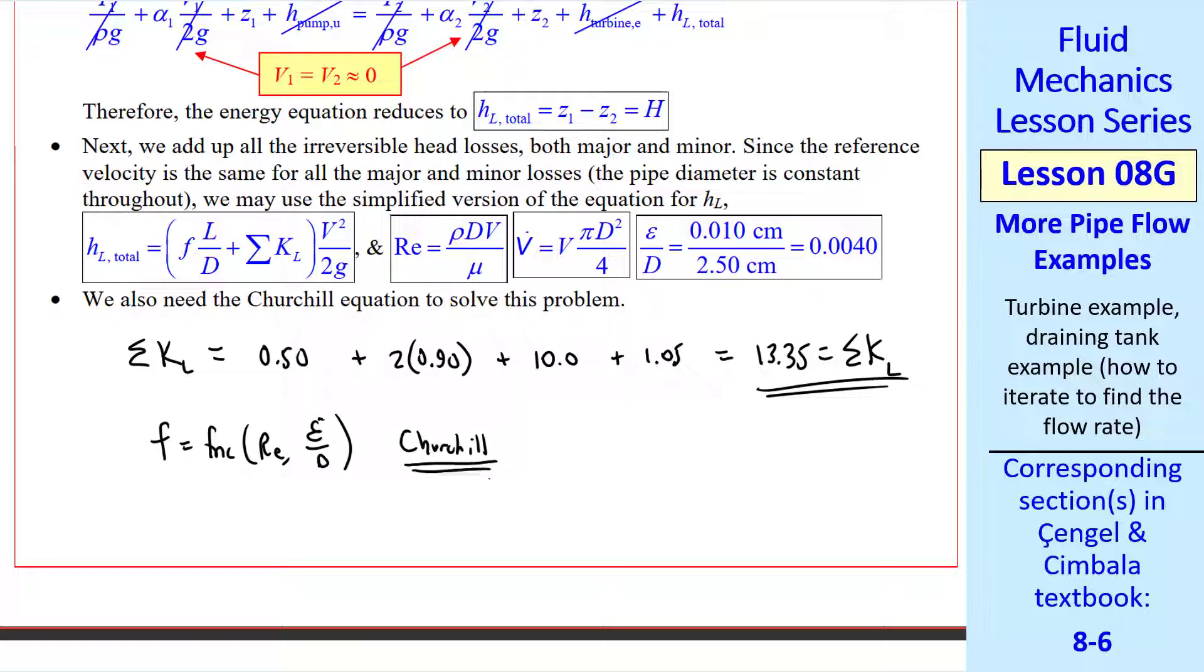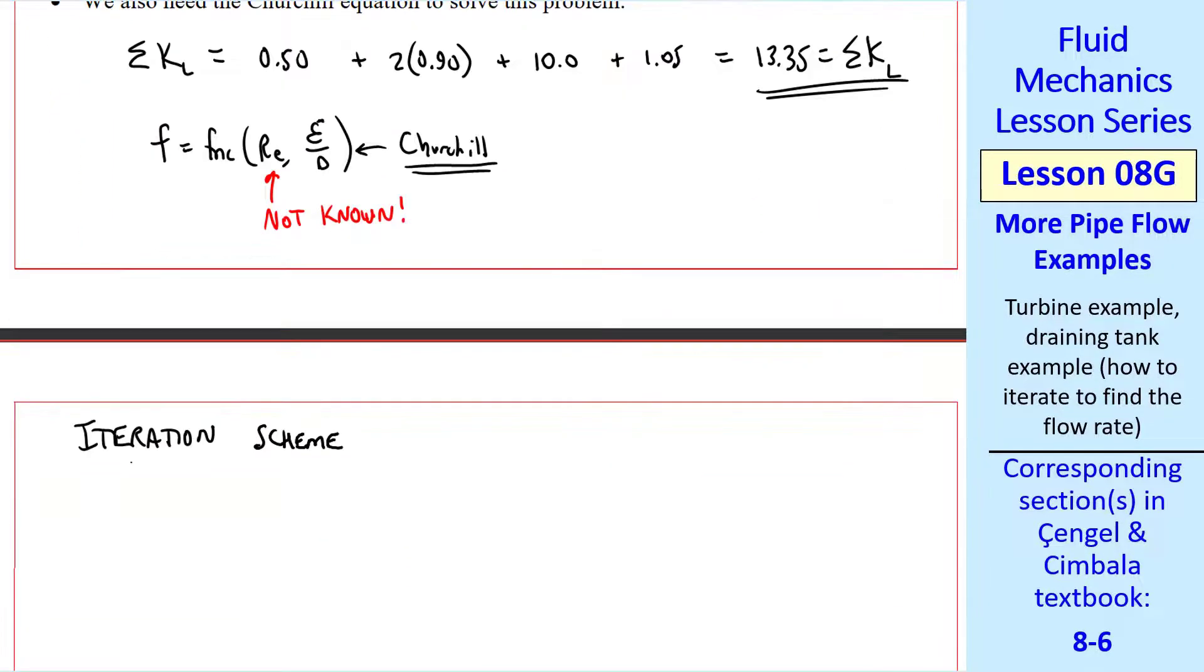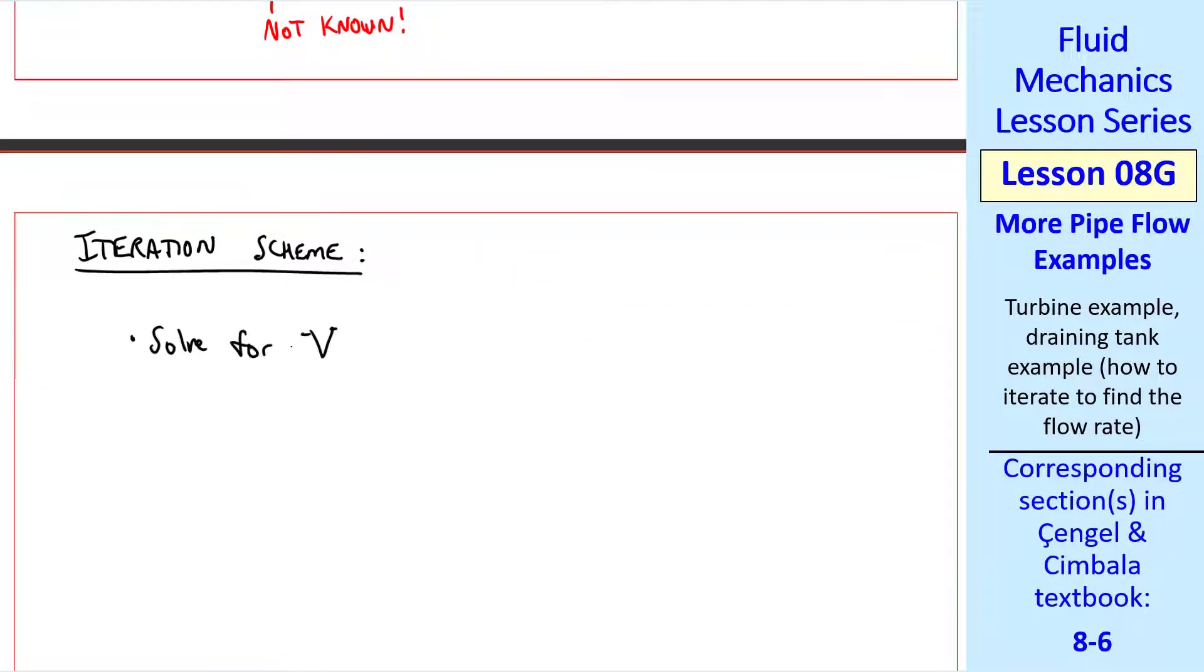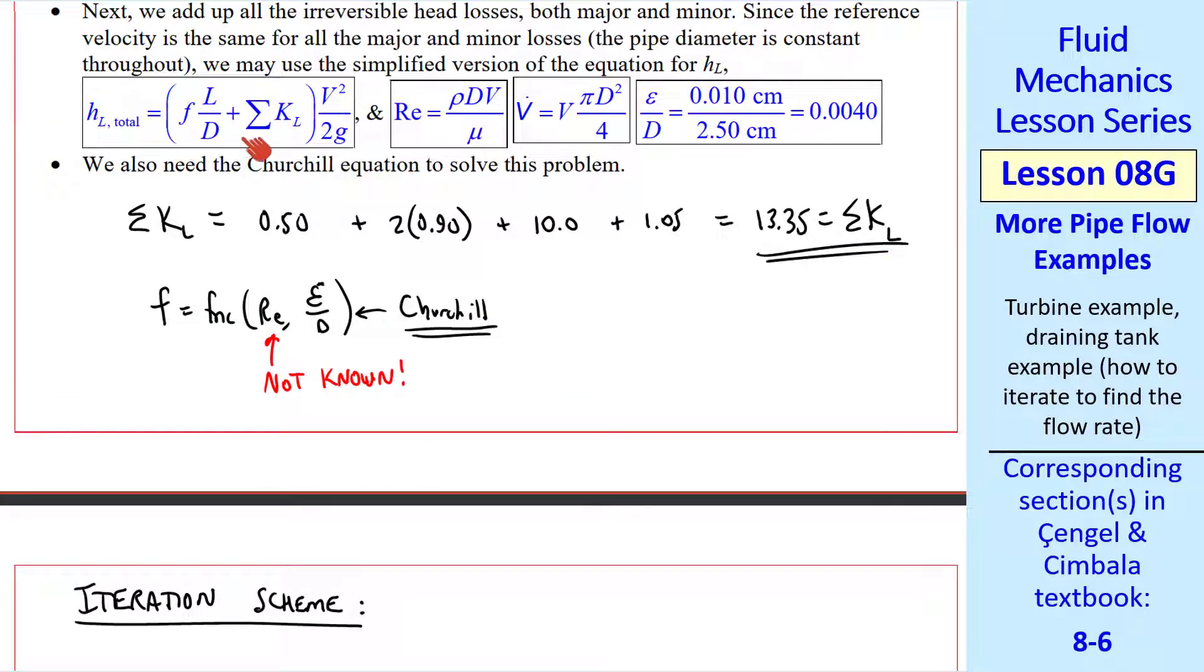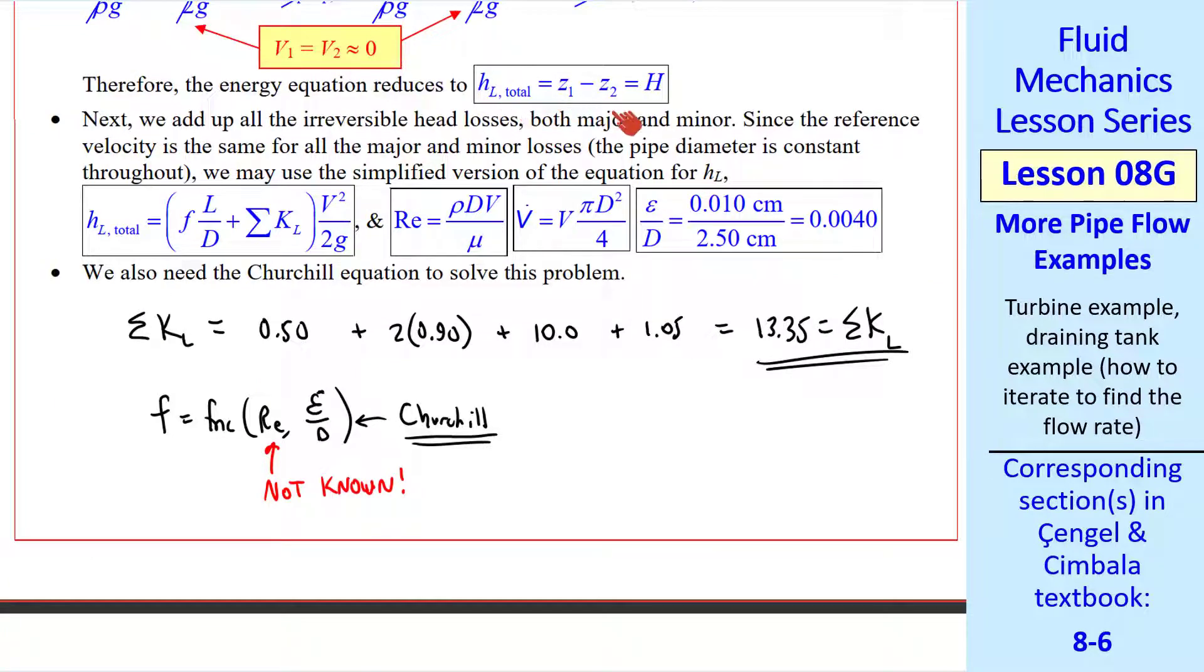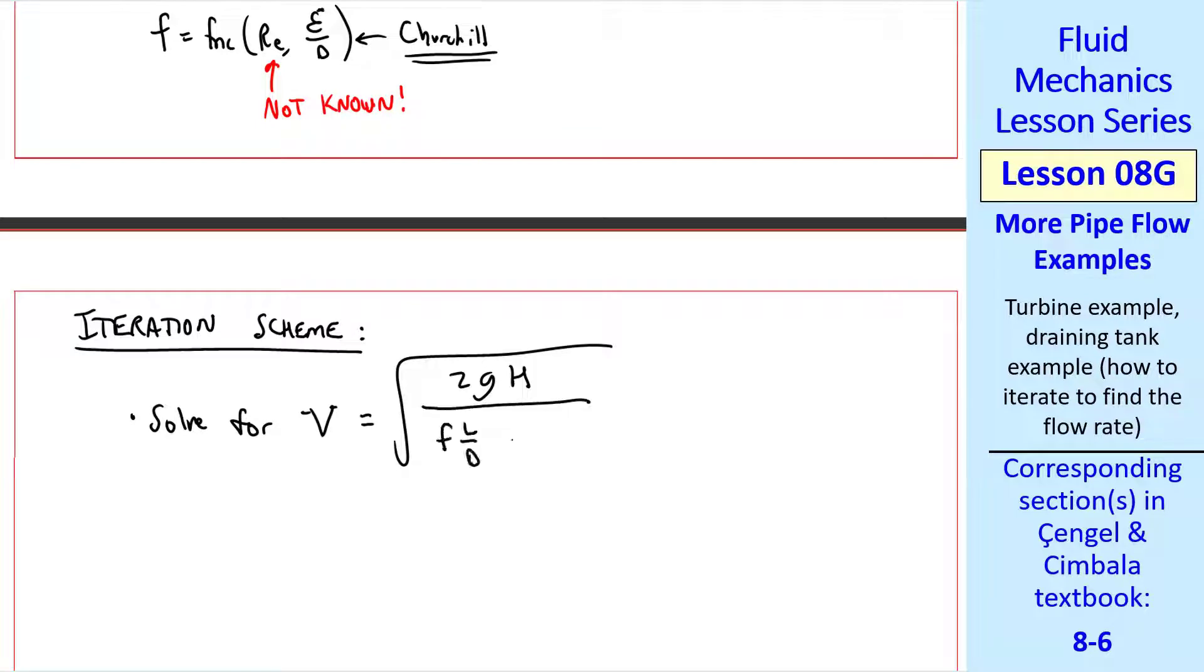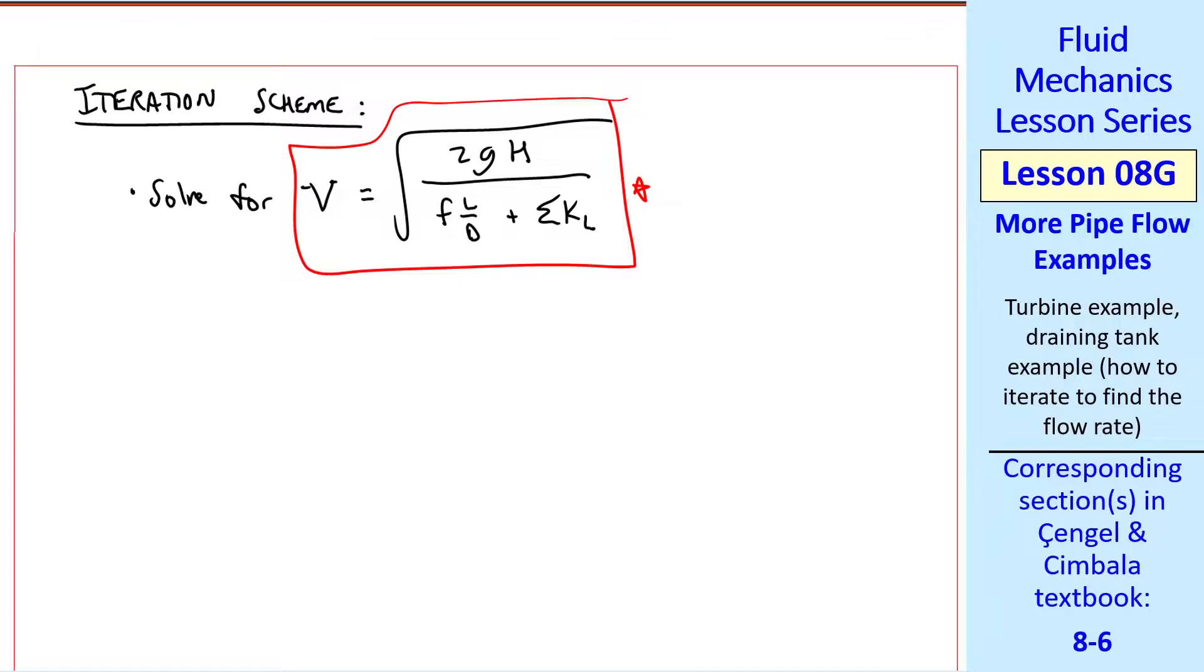Now we want to apply the Churchill equation, which gives us f as a function of Reynolds number and epsilon over d. The problem is the Reynolds number is not known. So what can we do? Well, we're going to have to iterate. There are several ways to do this. From experience, I've found that this way usually converges the fastest. What I'll do is solve for v from this equation, and knowing that HL total is just capital H. So we get v is square root of 2gh over fl over d plus sigma kl. Now we've set up the iteration scheme.